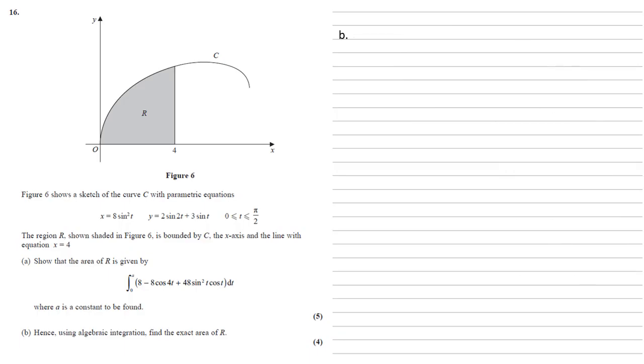For part B, hence using algebraic integration, we need to find the exact area of R. The hence tells us we're going to use part A.